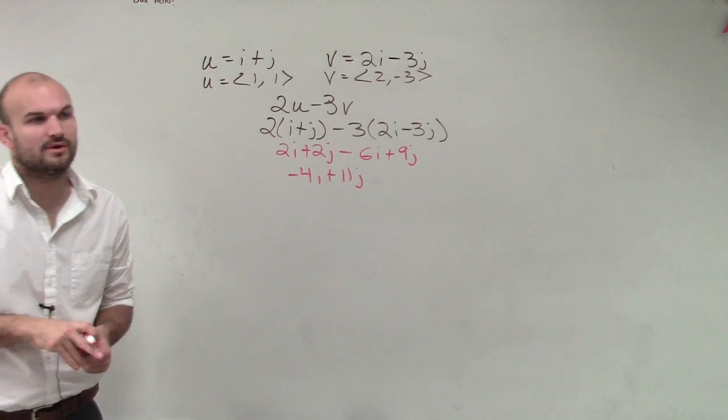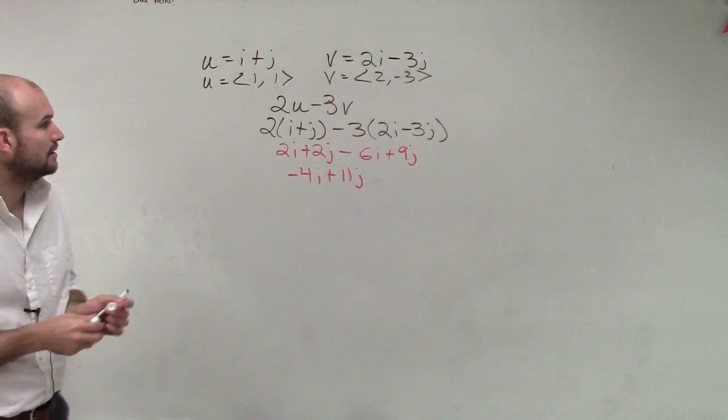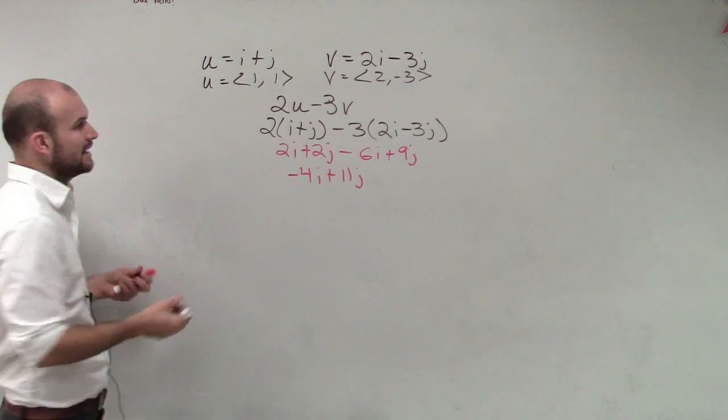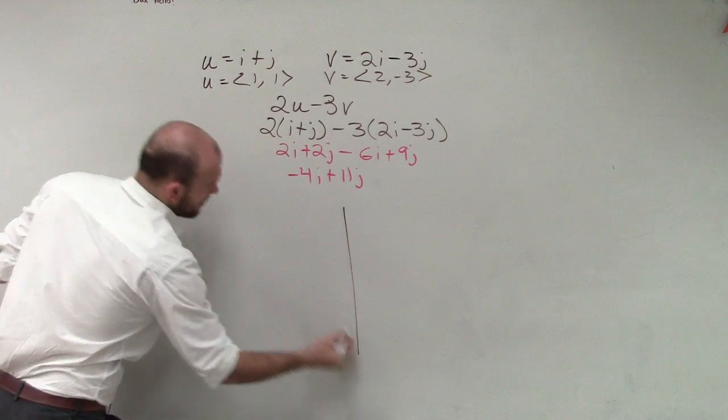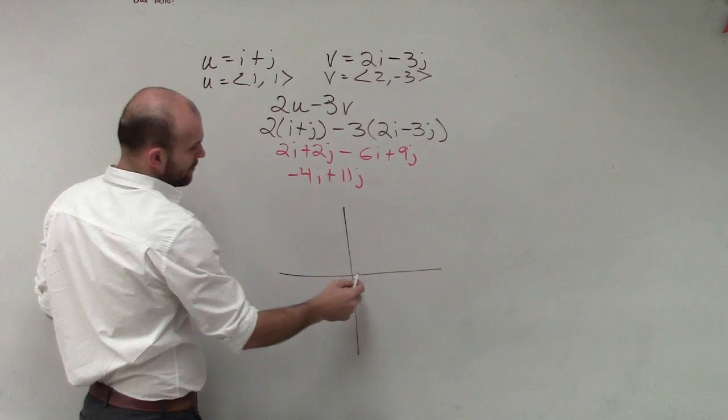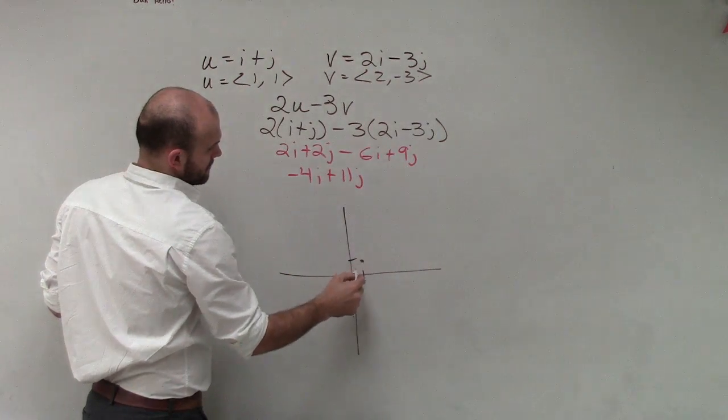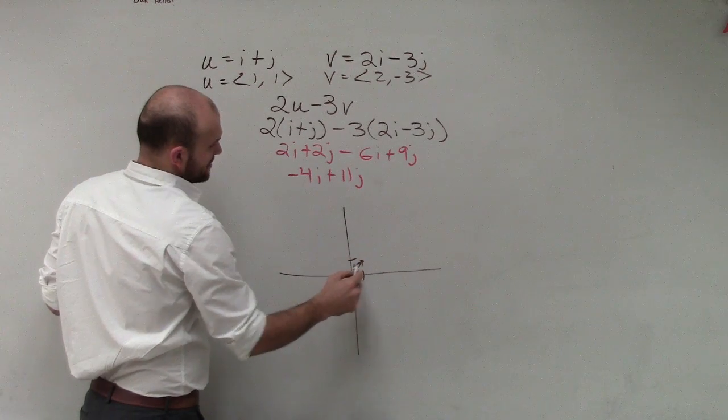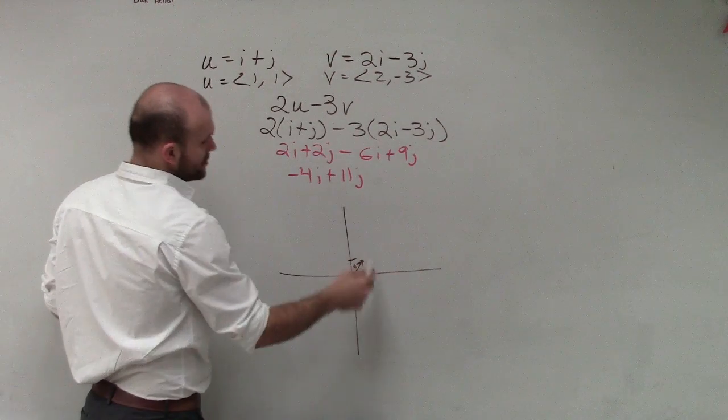So let's go and take a look at then what that would look like graphing. And I'm going to do 3v and 2u. So we know that u is 1 over 1. It's not a big vector.